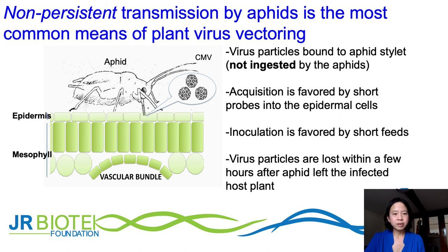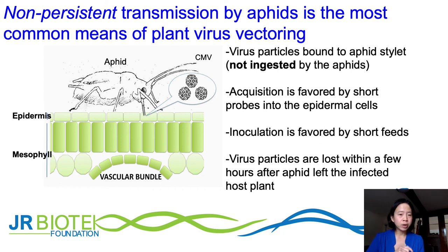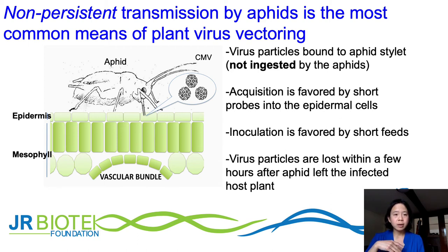Non-persistent transmission by aphid is the most common means of plant virus being vectored. The virus stays on the mouthpart; aphids acquire the virus very quickly, even when only probing on epidermal cells, and the virus particles are lost within a few hours. It is important to remember that aphids can transmit many different plant viruses, and certain viruses are also transmitted in a persistent way — swallowed and ingested by the aphid.